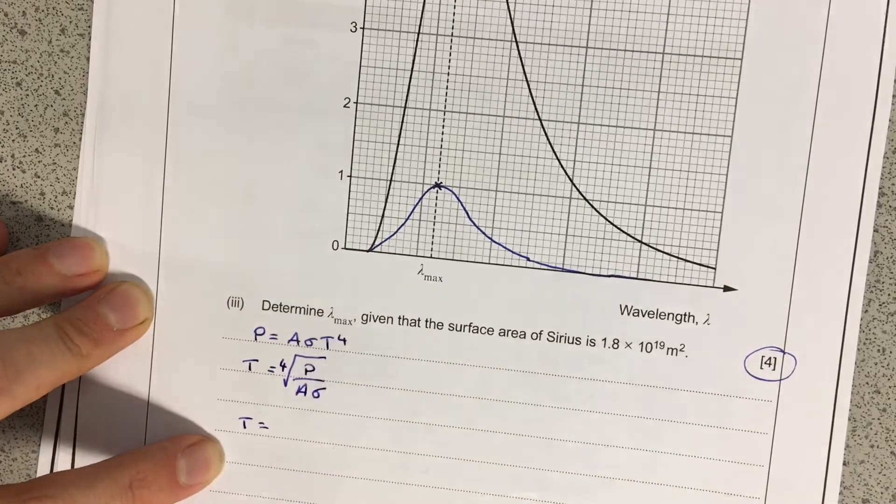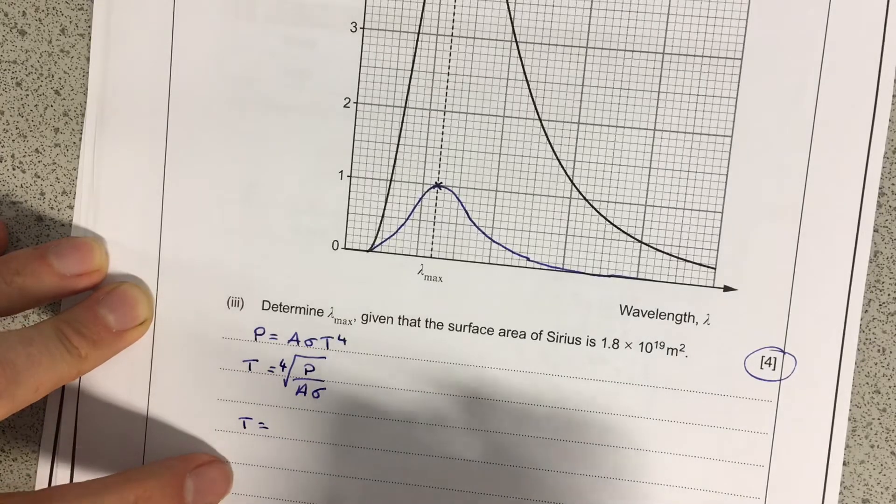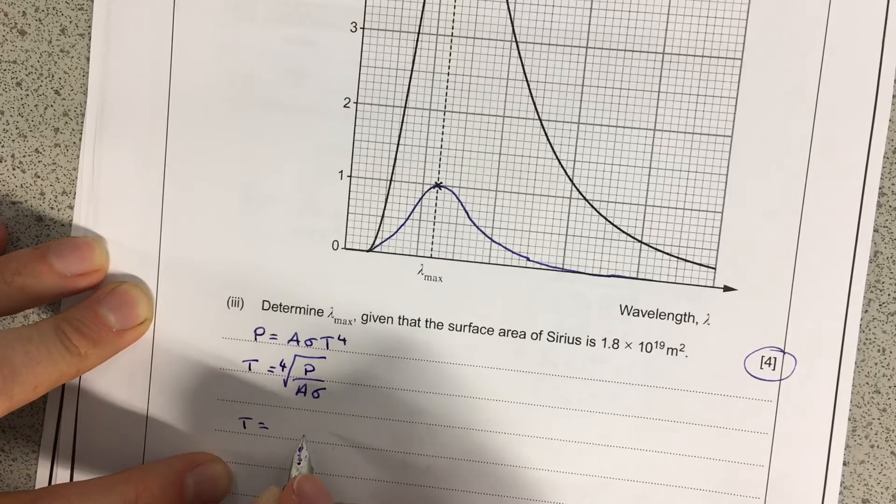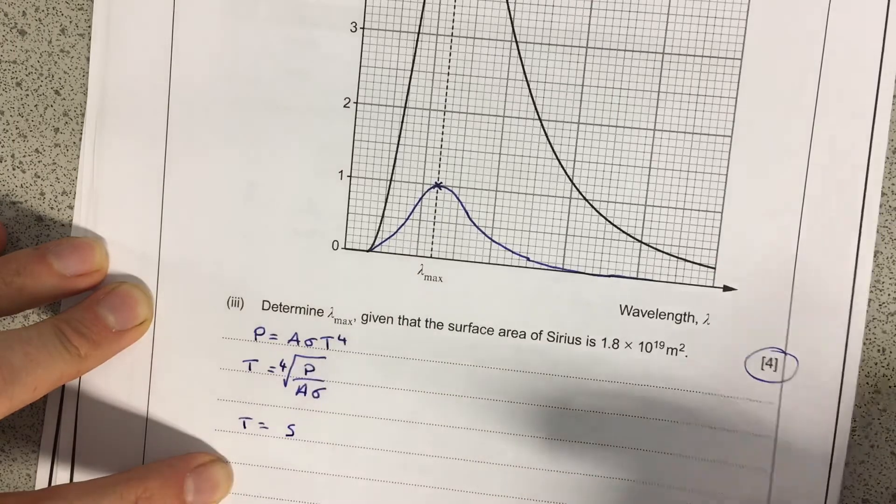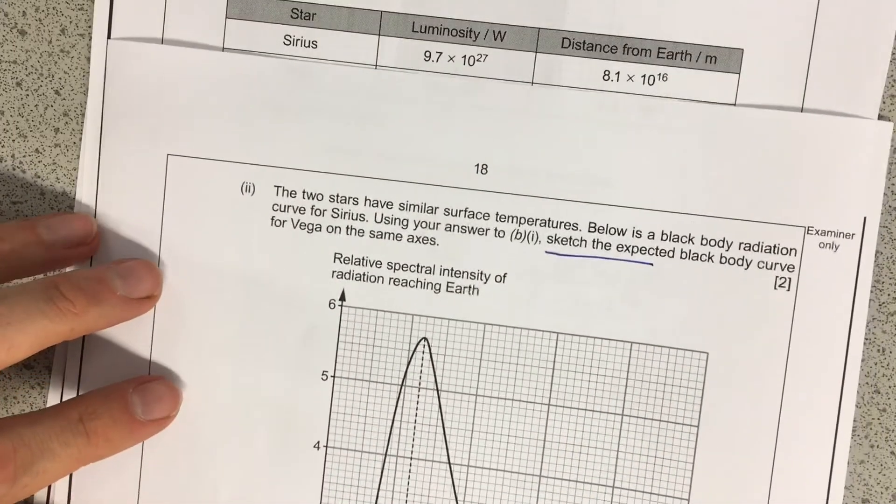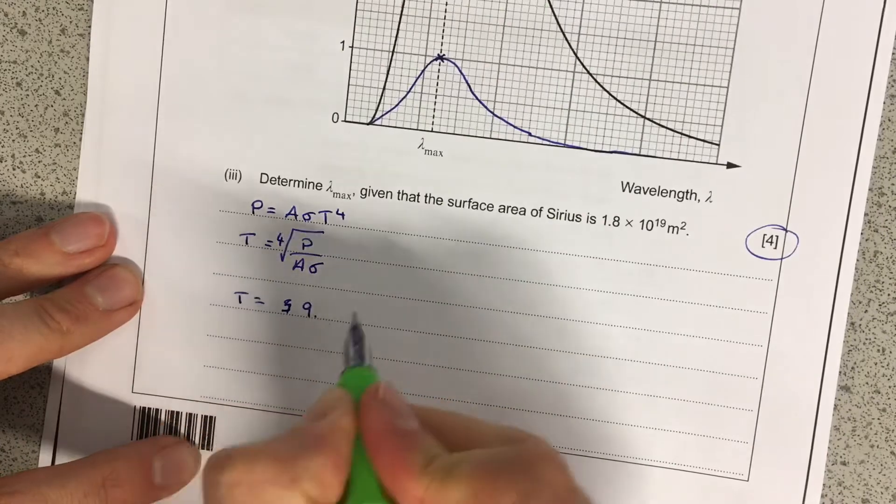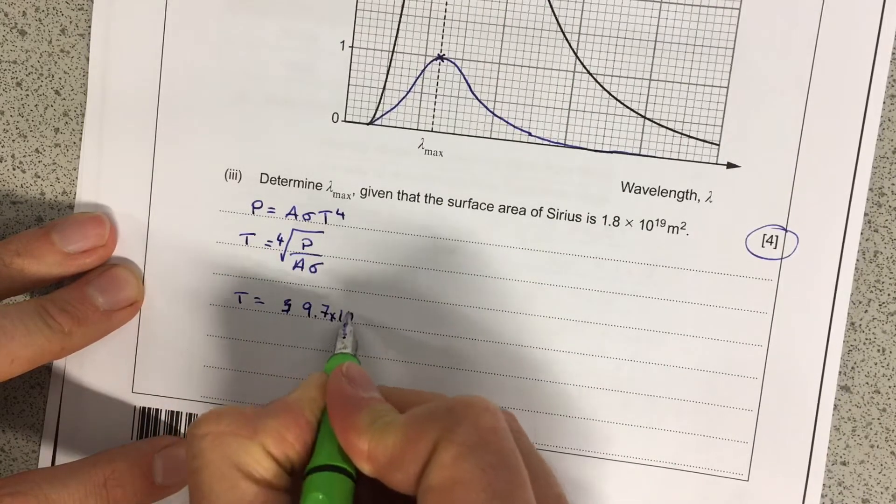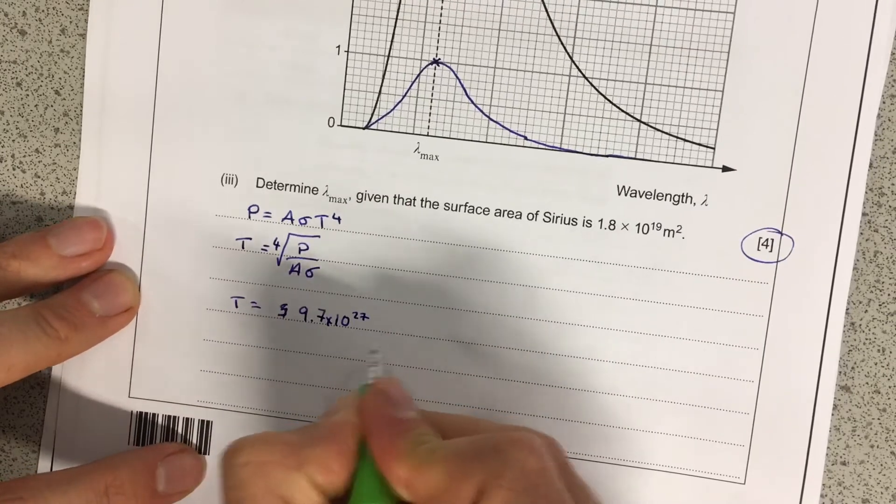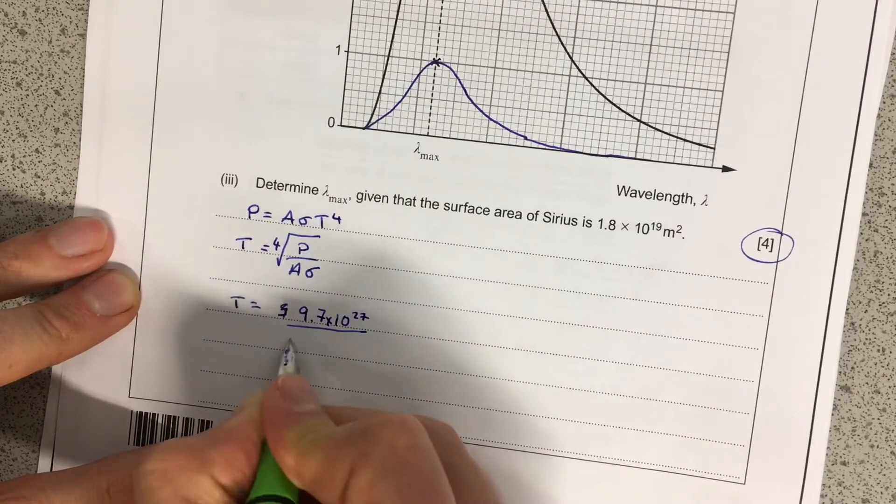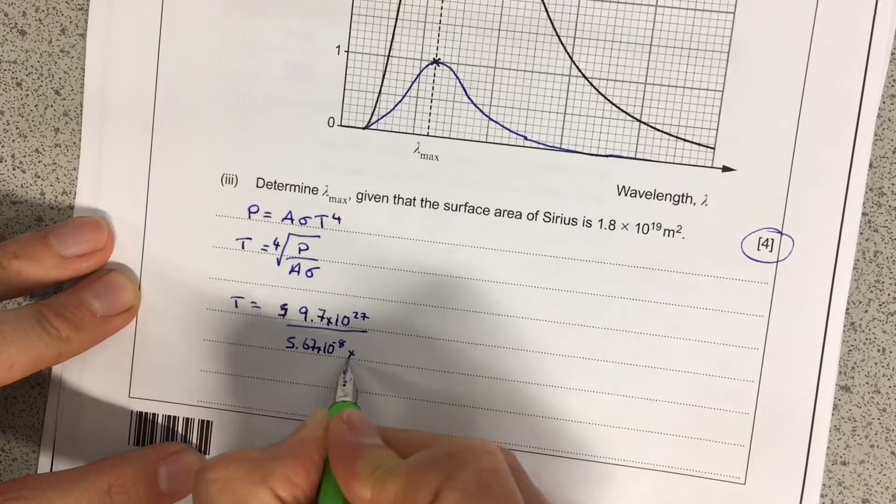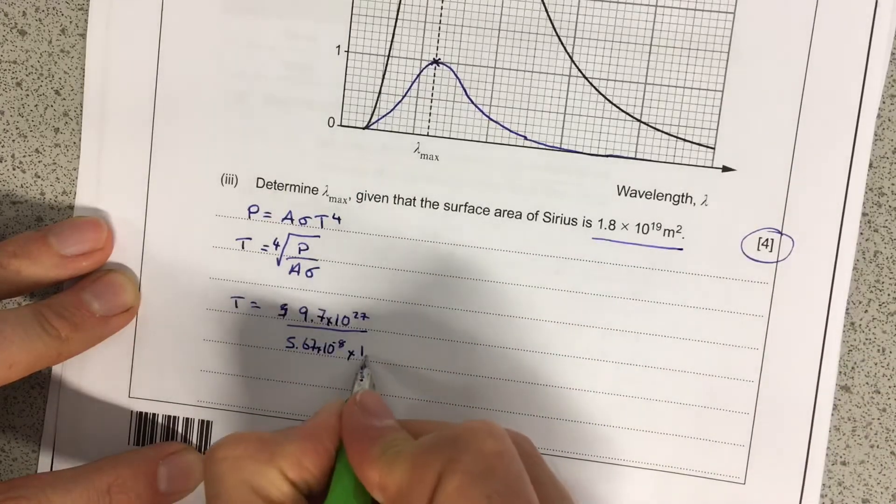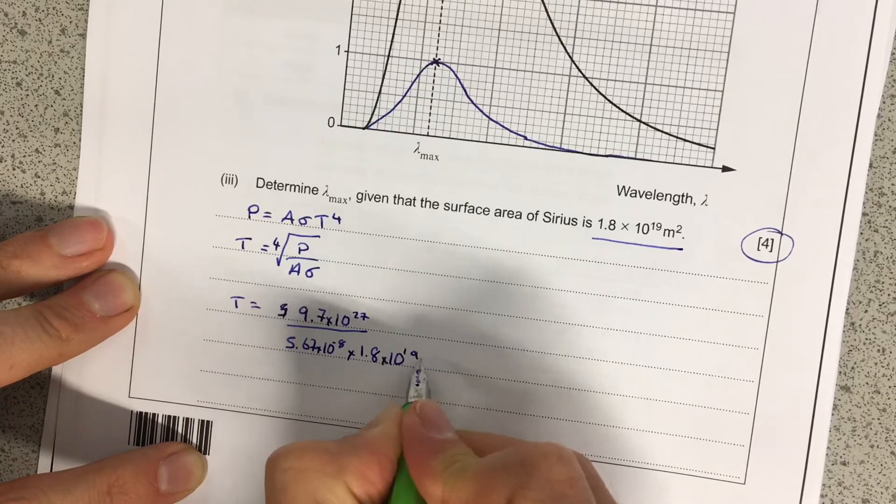So if we keep solving that out, we should get that the power output is... That will be the luminosity of the star there. So that's going to be 9.7 times 10 to the 27. And then we need that over the 5.67 times 10 to the minus 8, which is Stefan's constant, times the area, which is up here in the question, which is 1.8 times 10 to the 19.